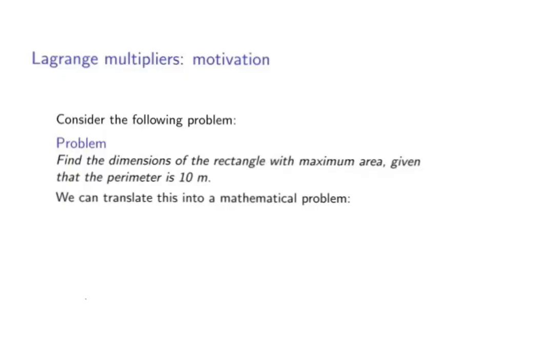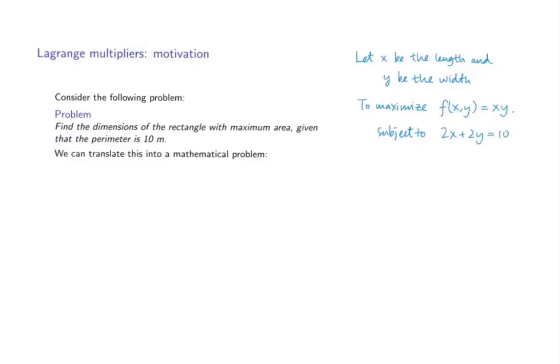We also come across optimization problems with given constraints, such as the following problem. Find the dimensions of the rectangle with maximum area given that the perimeter is 10 meters. We can formulate the question as follows: let x be the length and y be the width.